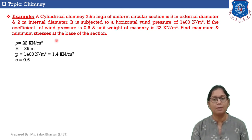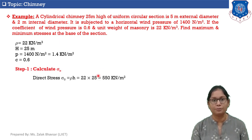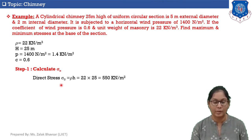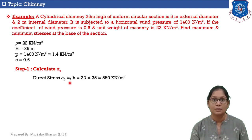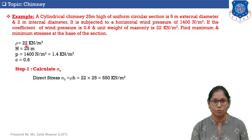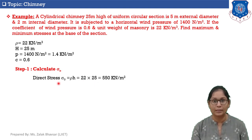Step number one: calculate sigma zero, the direct stress. The equation is sigma zero equals rho times h. Rho is given as 22 kN/m³ and h is the height of the chimney, which is 25 meters. Therefore sigma zero equals 22 times 25, giving sigma zero equals 550 kN/m².